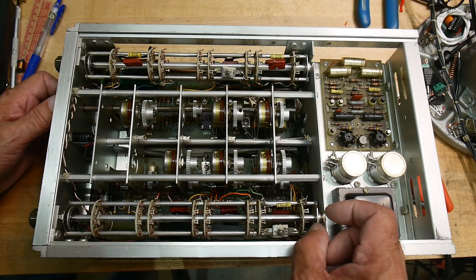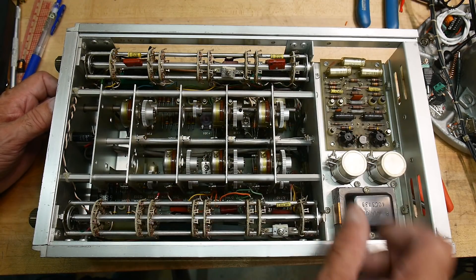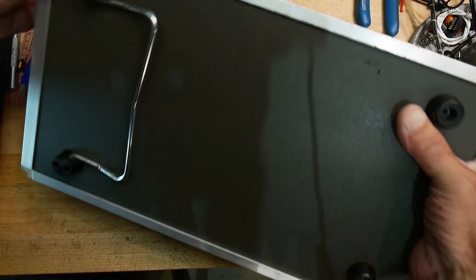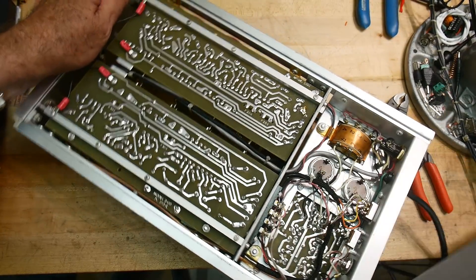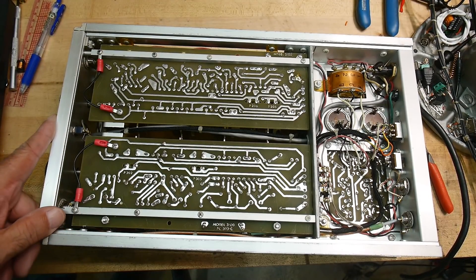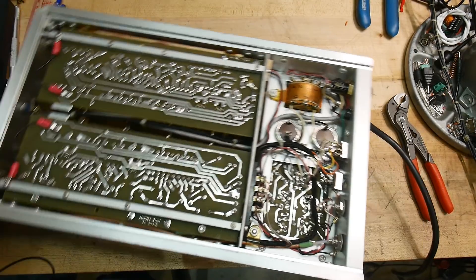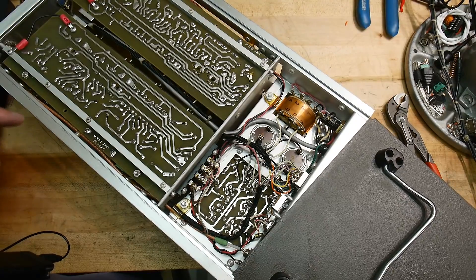And then down in there is all point to point wiring type of things. There is a PC board in there, but it's a lot of point to point wiring as well. Let's see. Just the bottom. Yeah, the bottom comes off too. All right. Bottom's kind of boring. Bottom's just the PC board.